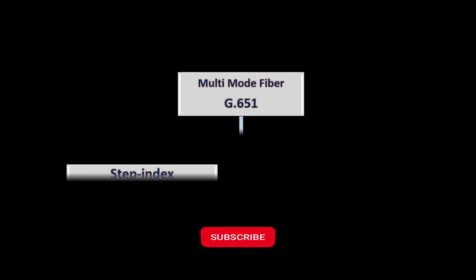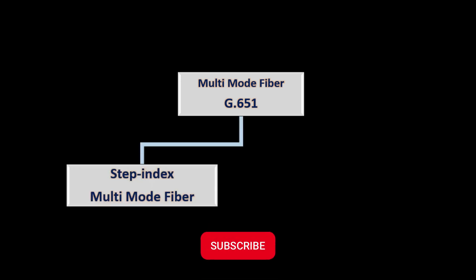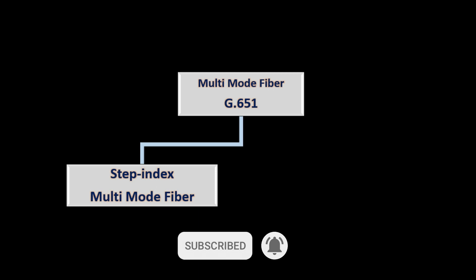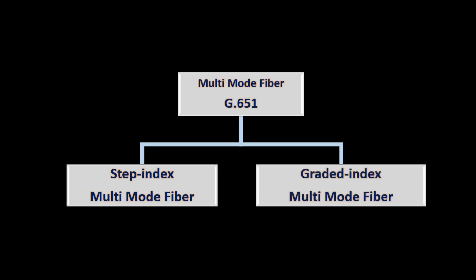Multi-mode fiber was the first to be deployed initially. It's defined in ITU-T standard G.651. It's divided into two groups: the step index multi-mode fiber and the graded index multi-mode fiber.